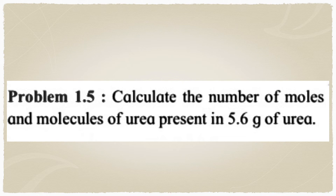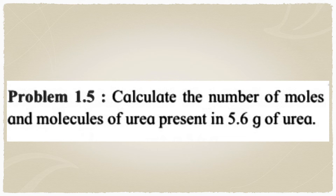Next problem: calculate the number of moles and molecules of urea present in 5.6 grams of urea. What is given: mass of urea = 5.6 grams. Urea has the formula NH₂CONH₂ (or CO(NH₂)₂). From this formula you can find the molecular mass, then find number of moles and number of molecules.